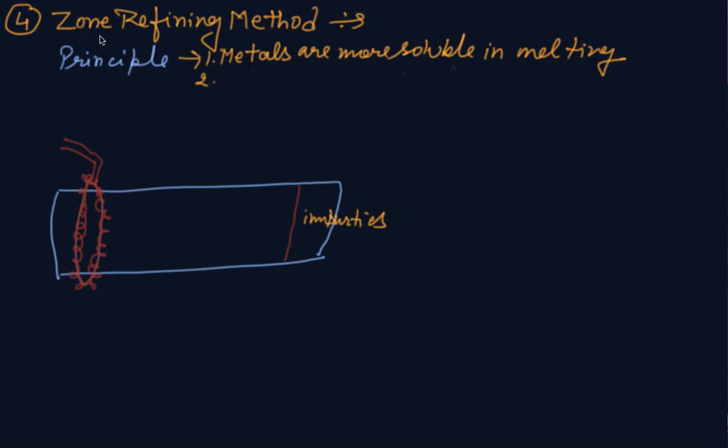Now the zone refining method is actually done whenever metal is almost required in pure state, almost required in purest form.